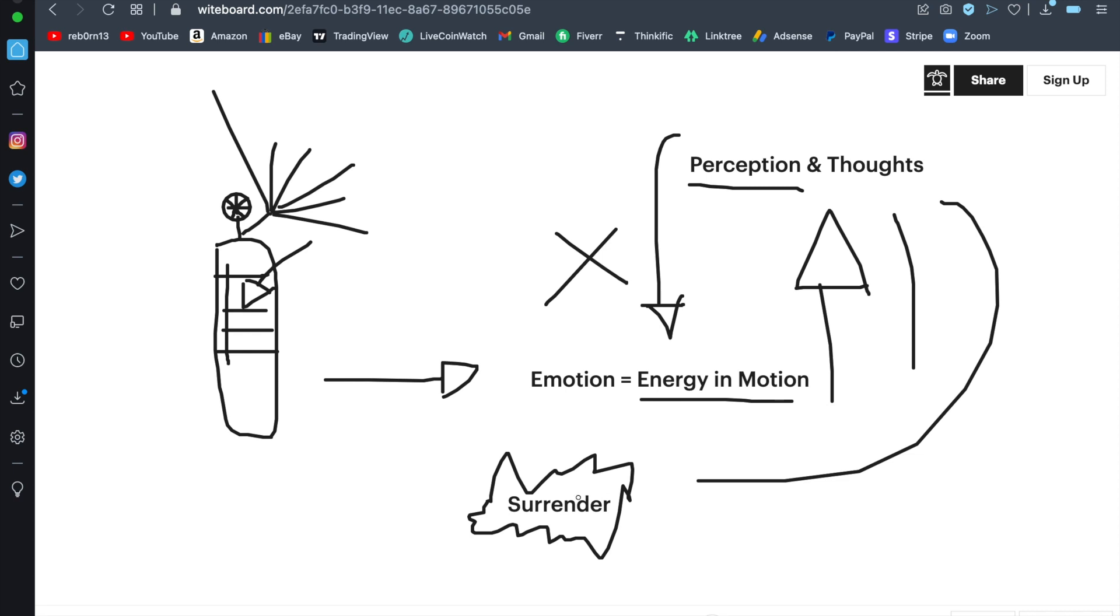In that process, you gradually diminish the pressure that the emotion holds. Over time, through the art of surrender, the emotion loses its intensity because you no longer attach to the thoughts that arise, since you've realized that your perception is founded upon illusion.